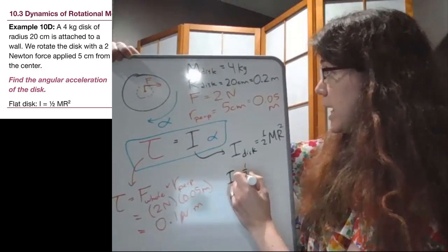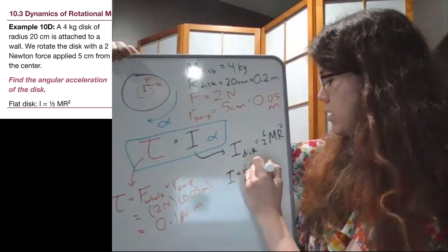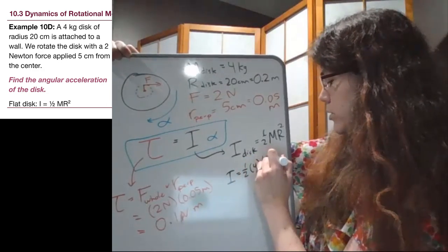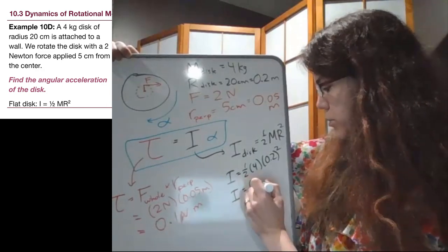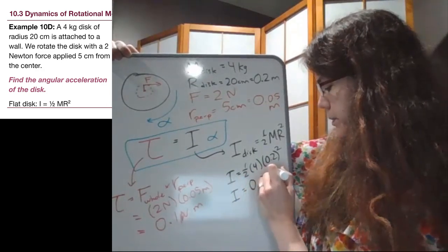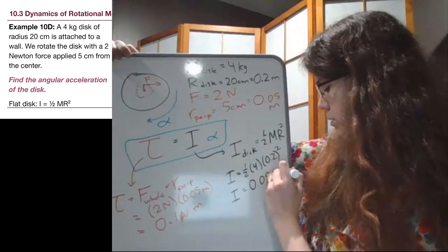So the moment of inertia is 1 half times 4 times 0.2 squared. And so we get 0.08 kilograms meters squared.